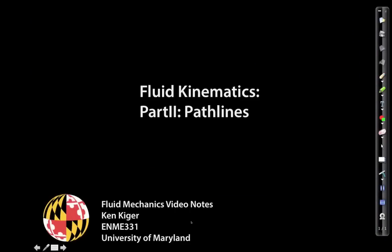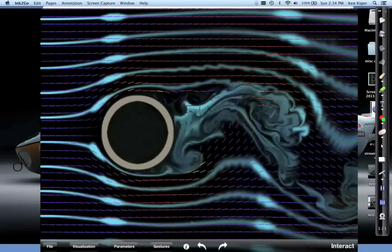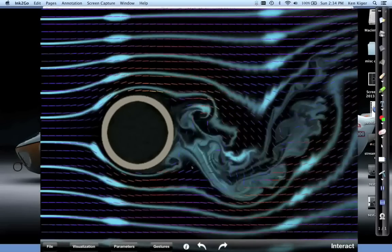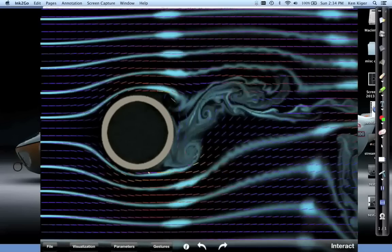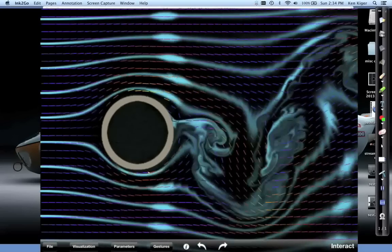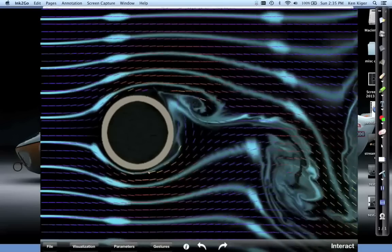Welcome to our second fluid kinematics video for ENME 331. This covers a description of pathlines and how to calculate them. In our numerical simulation of flow around a cylinder, a pathline — to give a qualitative sense — is marking a fluid element and watching it go through the flow.